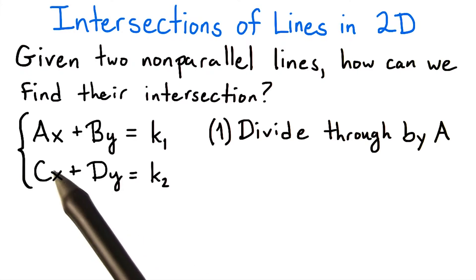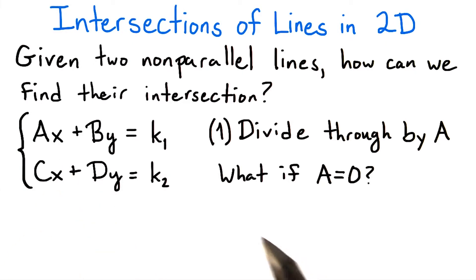It would be nice to divide the first equation through by a, so that we can solve for x. However, what if a equals 0? Well, if that were the case, we could move to the other equation and then try dividing this second equation through by c. But what if c is also 0?